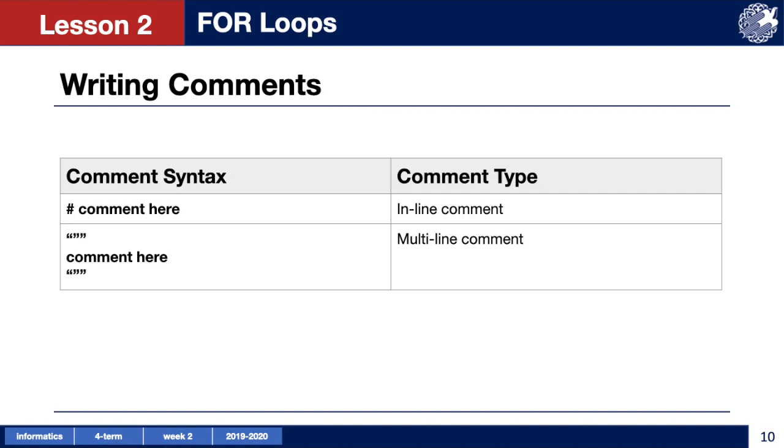There are two types of comments you can write in python: an inline comment and multiline comment. Inline comments can be used in your code placed anywhere you think will be helpful to record information. To write an inline comment start the line with a hashtag and then type your comment next to it. Now all the comments in that line will be totally ignored by the computer.